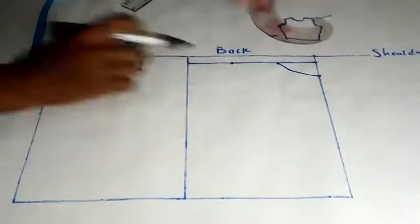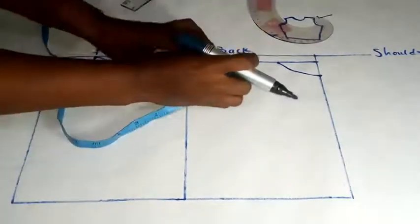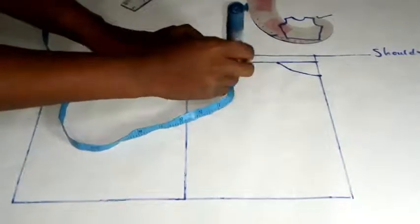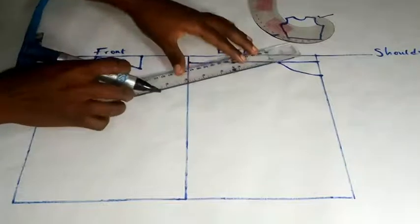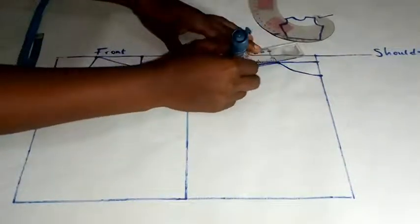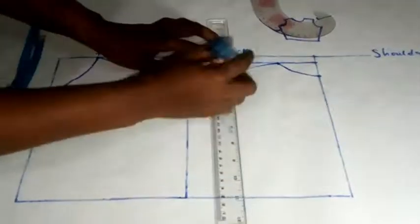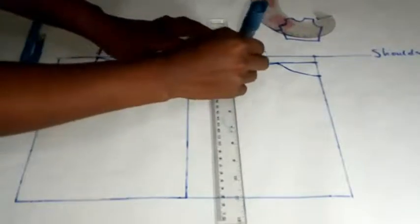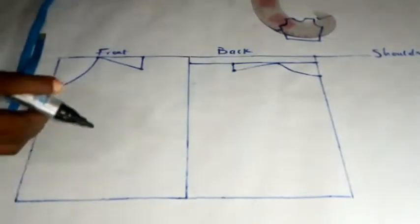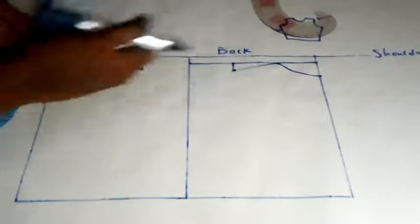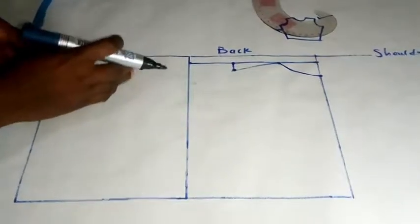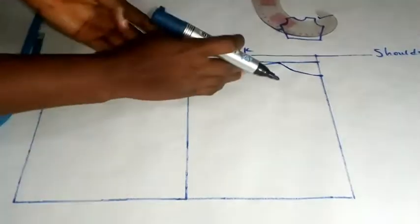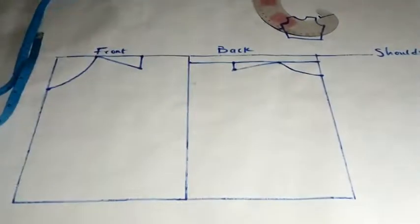So now half inch is gone, but I left it half to make it 1 inch. So I'm going to connect it like this. While we are slanting our shoulder for the front by 1 inch, we are slanting the back by half inch.